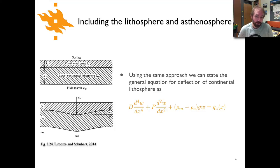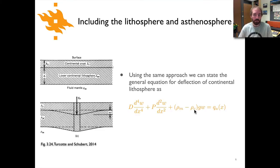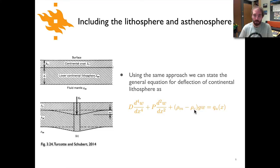You could do exactly the same thing for continental lithosphere — the only difference is that your density difference calculation is going to contain rho_M minus rho_C, the density of continental crust, instead of the density of water. Otherwise this is exactly the same as the previous slide.